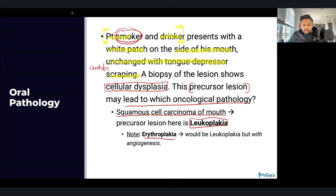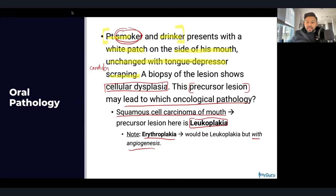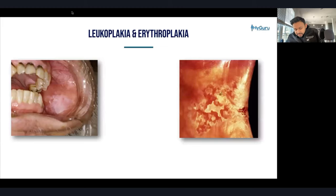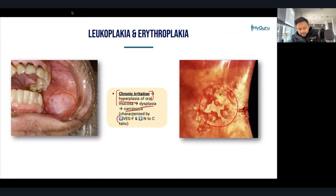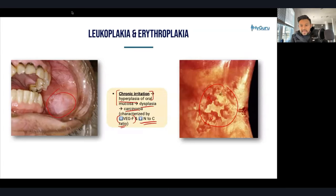Erythroplakia is leukoplakia with angiogenesis, meaning it is more cancerous because you have increased VEGF bringing blood vessels to that area. The concept to note is that chronic irritation leads to hyperplasia of oral mucosa, then dysplasia and carcinoma. Carcinoma is characterized by increased VEGF and angiogenesis. On exam questions, a high nuclear-to-cytosol ratio indicates neoplasia.